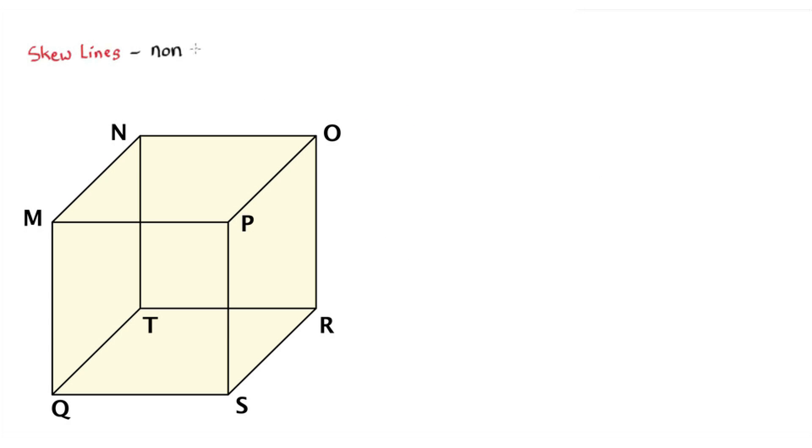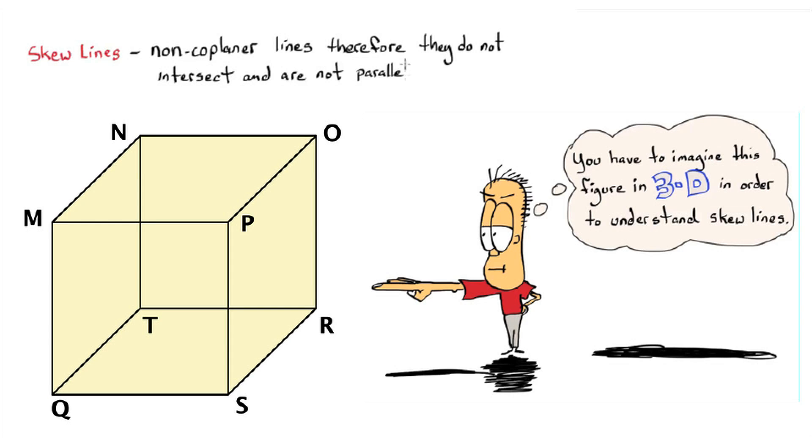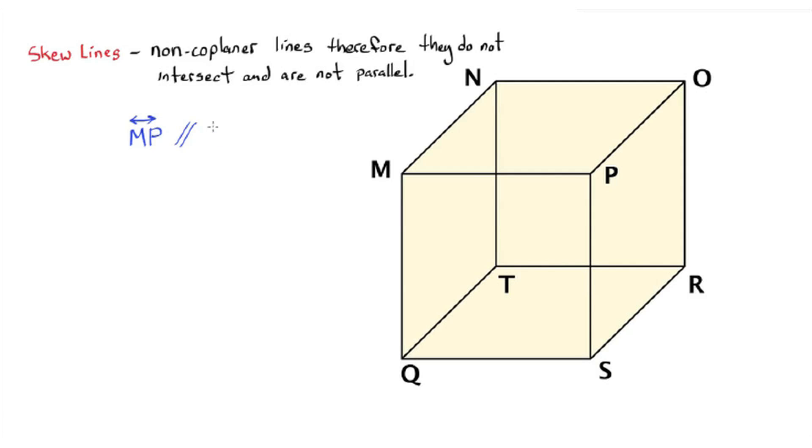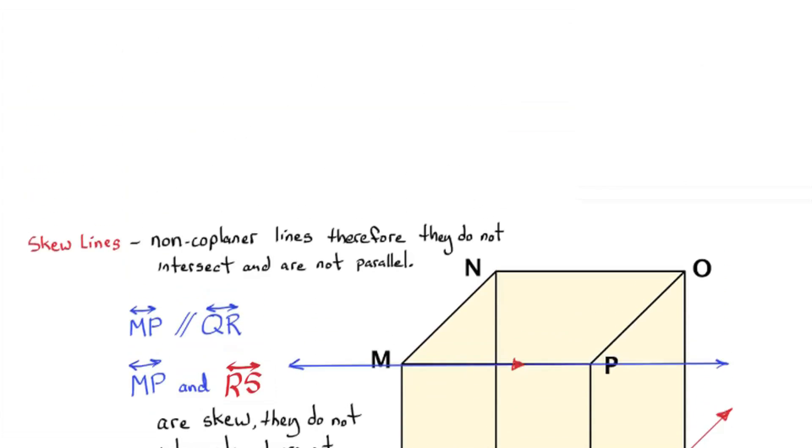Let's take a look at the next thing now. Skew lines. Non-coplanar lines. Therefore, they do not intersect and are not parallel. Line MP is parallel to line QR. I can show these arrows which indicate parallel lines in the drawing. However, line MP and line RS are skew. They do not intersect and are not parallel. I hope that makes sense for everybody.